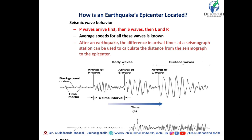To locate the earthquake epicenter, we use seismic wave behavior: P waves arrive first, then S waves, then L and R surface waves. After an earthquake, the different arrival times recorded at seismograph stations can be used to calculate the distance from the seismograph to the epicenter. The speed of each wave depends on the type of rock strata — whether black cotton soil, rocky strata, or murram strata — so wave speed varies accordingly.